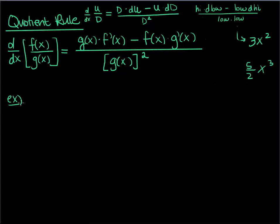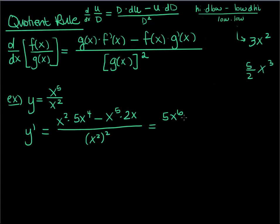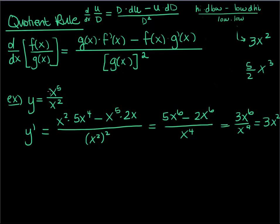Let's verify with x to the 5th over x squared. y prime: down d up — write the denominator, x squared, times the derivative of the top, which is 5x to the 4th — minus up d down, so x to the 5th times the derivative of the bottom, which is 2x, all over down down, x squared squared equals x to the 4th. That gives 5x to the 6th minus 2x to the 6th over x to the 4th, which is 3x squared — and we know that's correct because x to the 5th over x squared is x cubed.